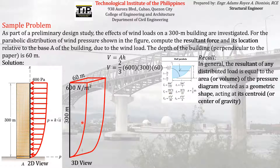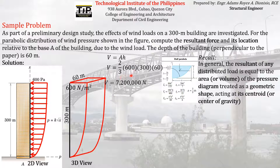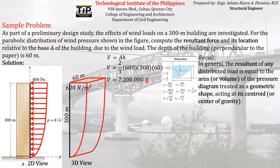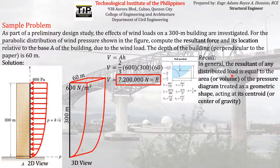That gives us the volume of this geometric shape. As established in our discussion, this volume equals the resultant of the distributed loading. The result is 7,200,000 Newtons. Let's check units: meters × meters × N/m² — the m² cancels, leaving Newtons. So the resultant force of the wind load on the building is 7,200,000 N. That is the first answer.